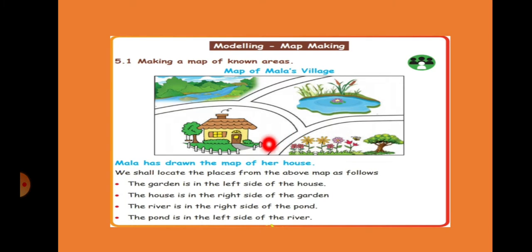Left side, to the left side of the house. Now what about the house? To the right side of the garden. What about the pond? Pond is left side to the river. What about the river? River is right side to the pond. Simple. So simple. This is what we are going to learn.